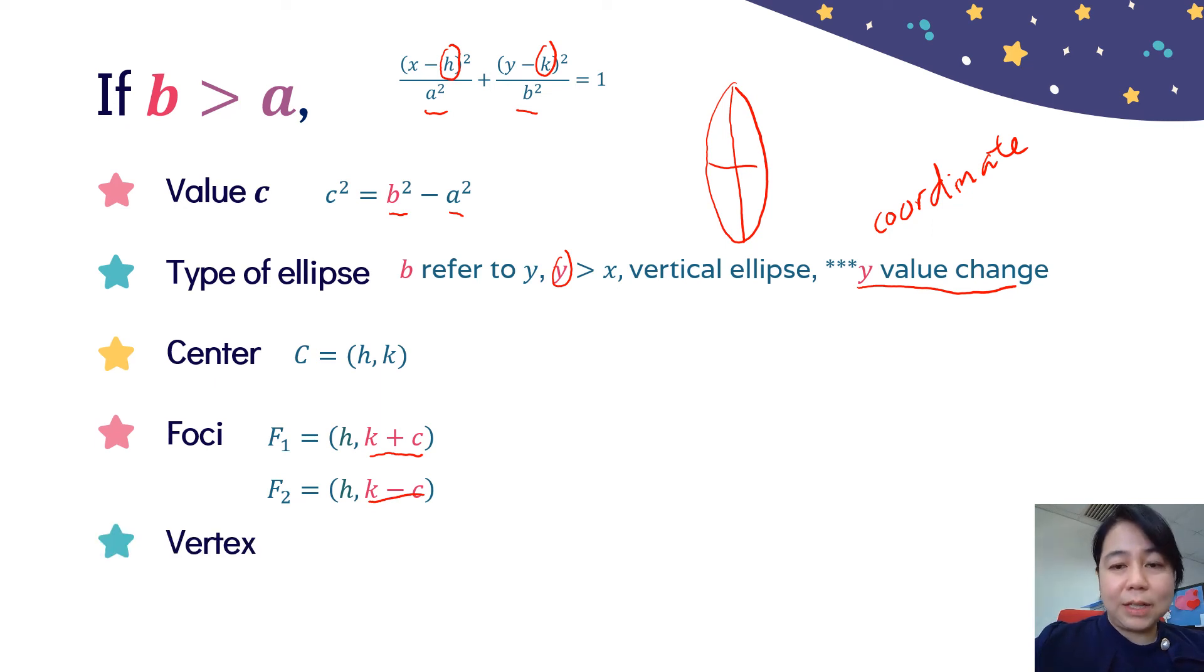The Y coordinate change, same for the vertex. V₁ is (h, k+b), B with Y. So when the Y coordinate change, we need to plus B. For the V₂, it is equal to (h, k-b). For the major axis, it is 2B. B is greater than A.